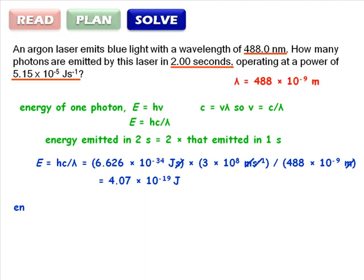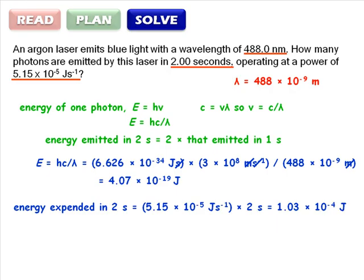The energy expended in two seconds is just the power, 5.15 times 10 to the negative 5 joules per second multiplied by two seconds to give 1.03 times 10 to the negative 4 joules. Cancel the seconds. Nearly there.